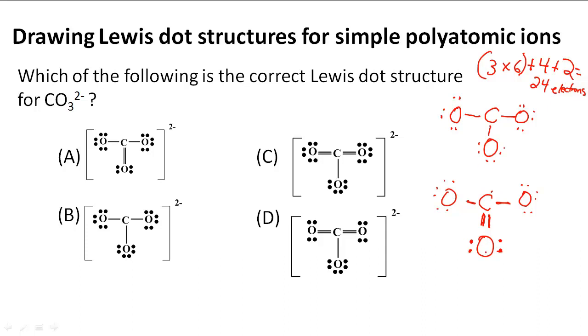And here also, this oxygen, even though it has only two lone pairs, it has one, two, three, four, five, six, seven, eight. So it still satisfies the octet rule.